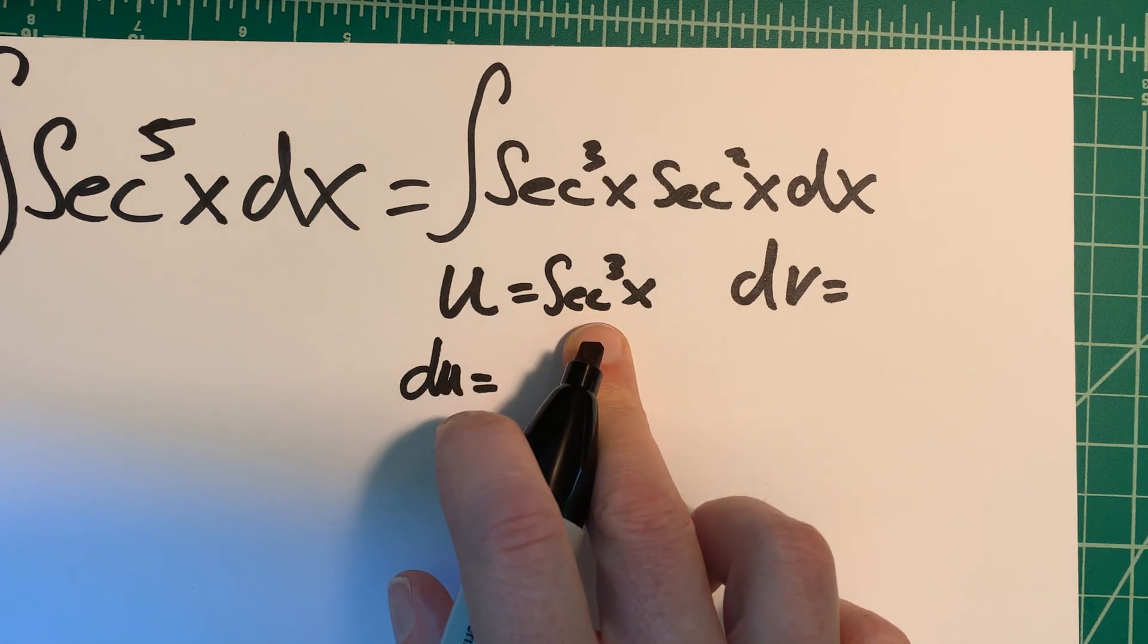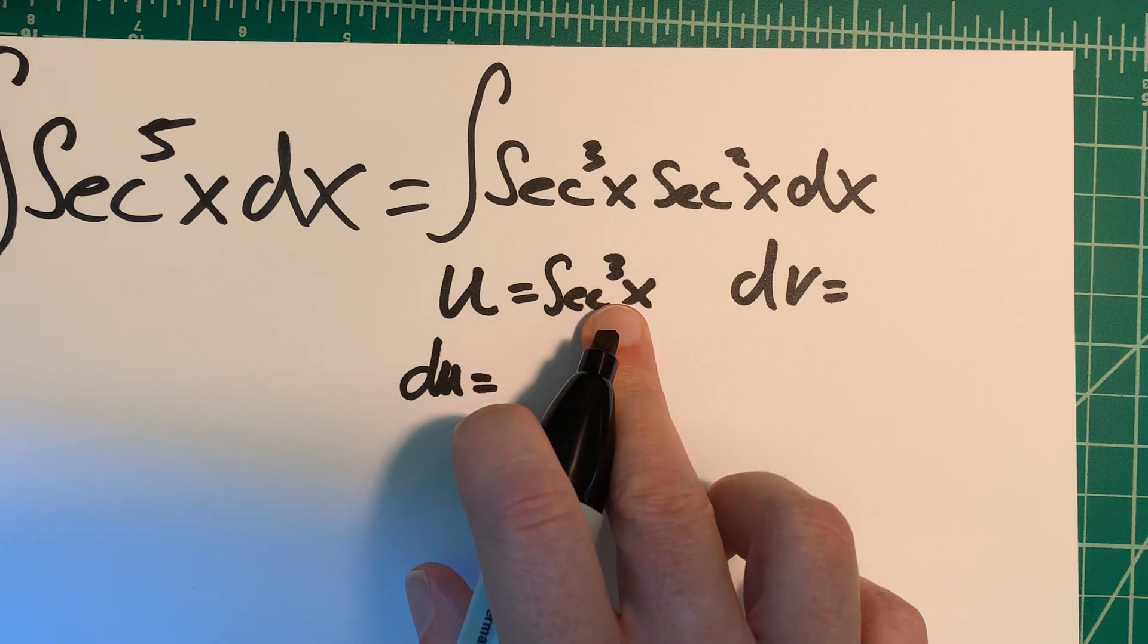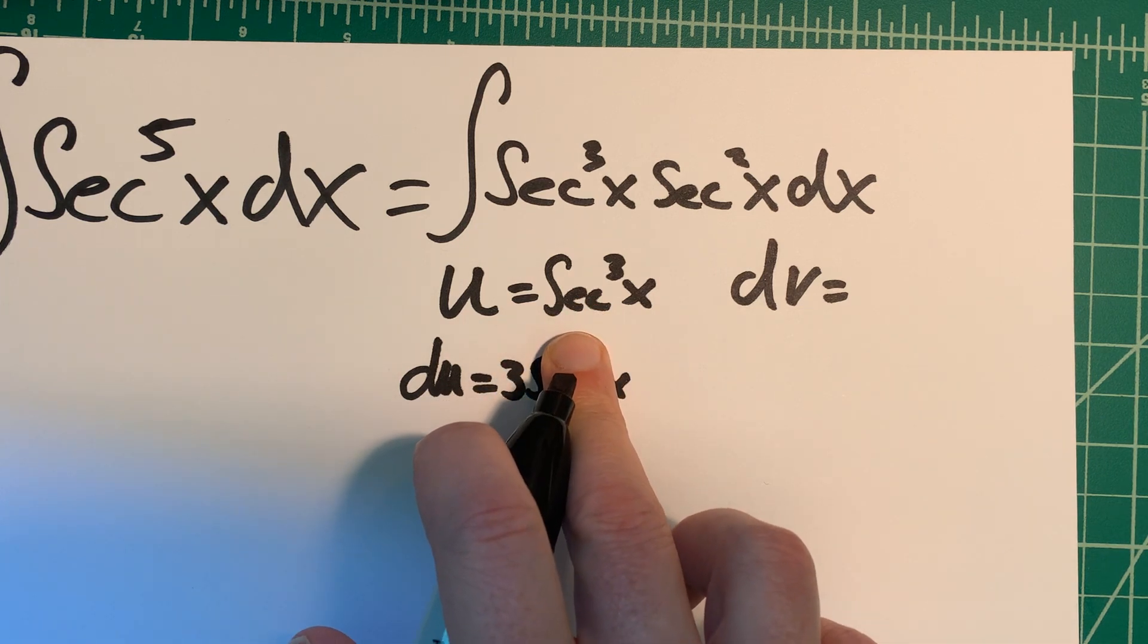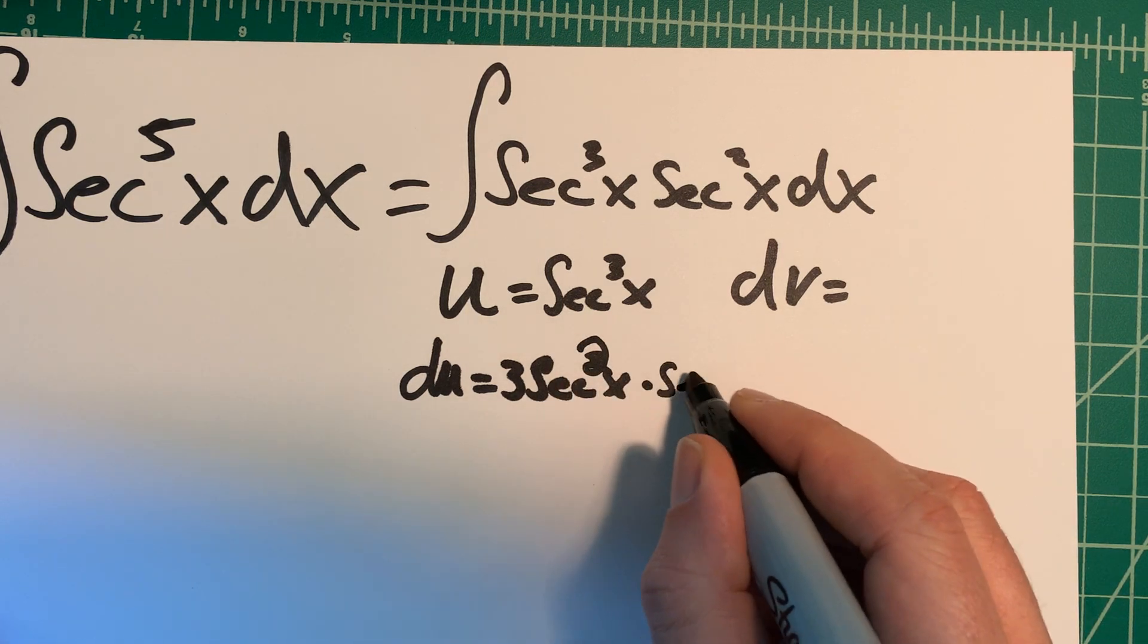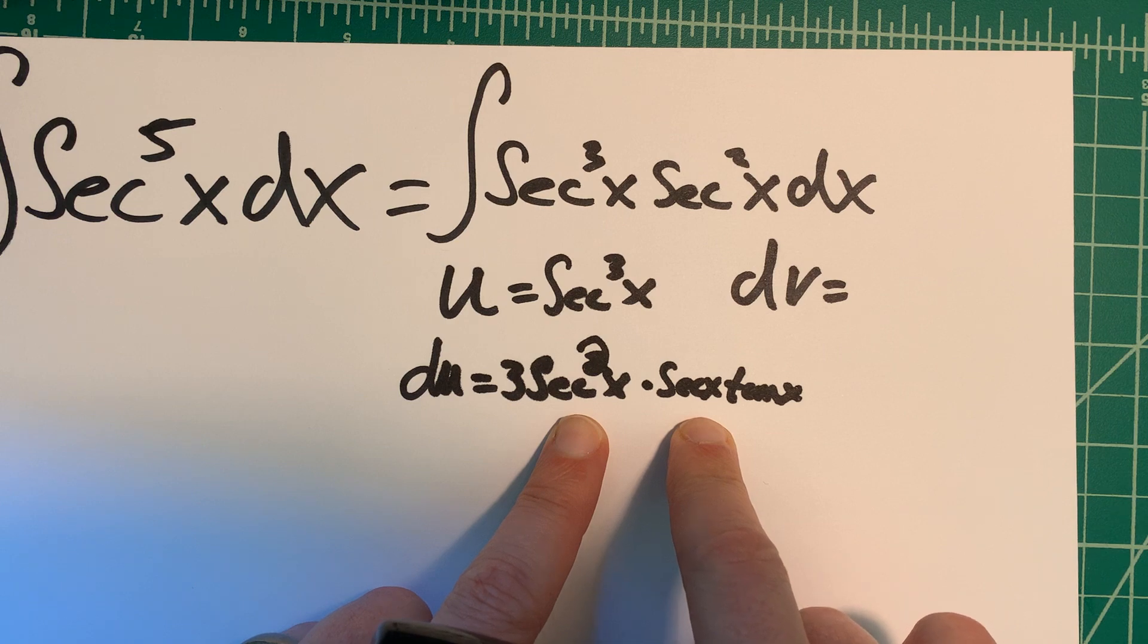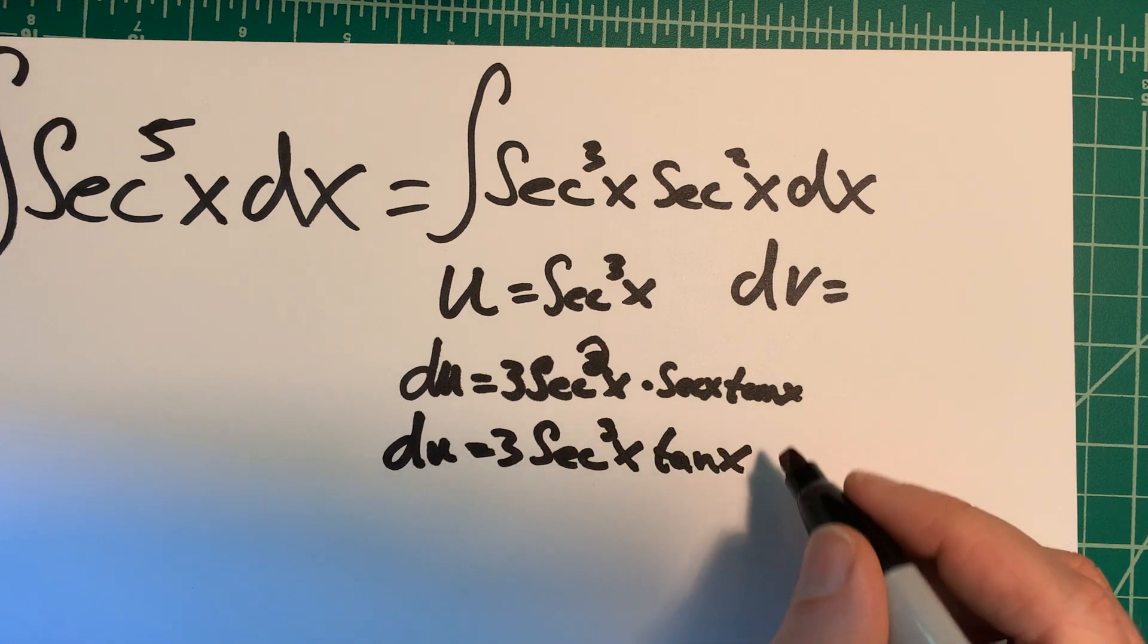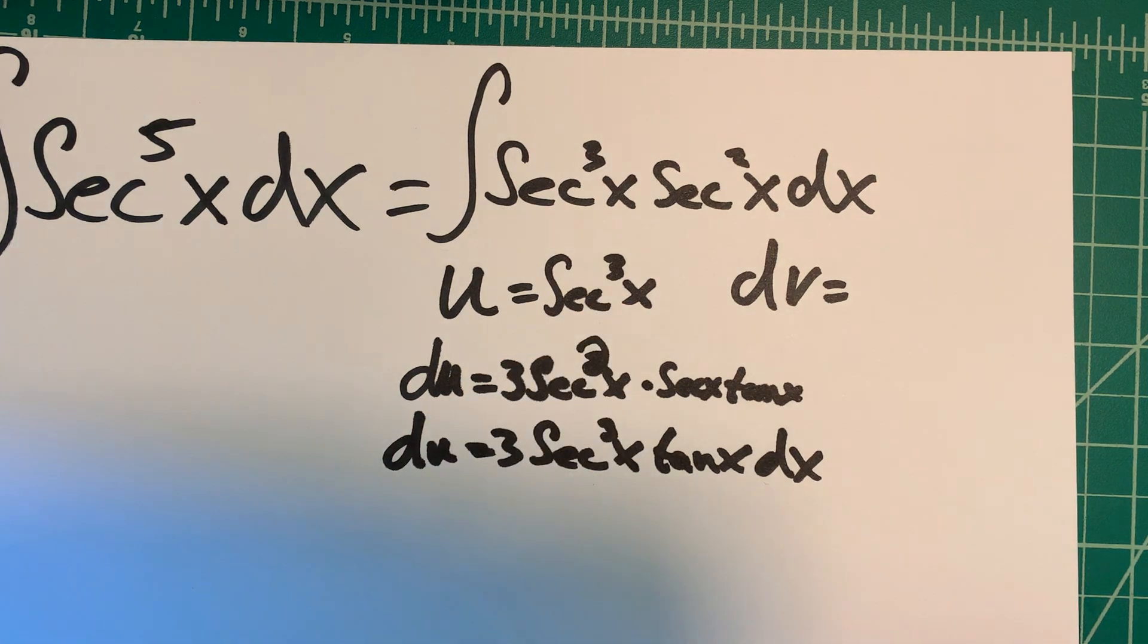Well, if I'm taking the derivative, I have to remember chain rule. So this is secant x to the third. If I take the derivative of this, the three will come down and this becomes a 2. Then I have to take the derivative of the inside. What is the derivative of secant? That's secant tangent. I've got to be careful, this was a 2. So this is secant x tangent x. Let's clean that up a little bit. This is secant squared times secant x. So I can write du as 3 secant cubed x tangent x dx.